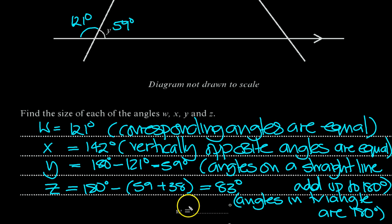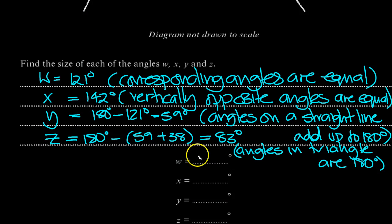So W was 121. Let's put it in the place where they want us to enter it then. 121, 142, 59, and 83 degrees.